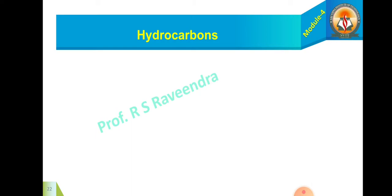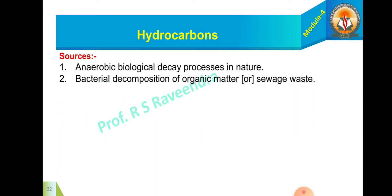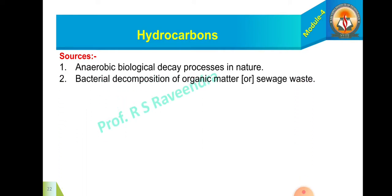The sources for hydrocarbons as a primary air pollutant involves anaerobic biological decay process in the nature, bacterial decomposition of organic matter or sewage waste.